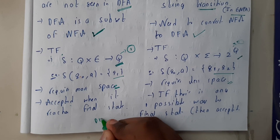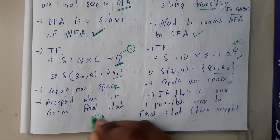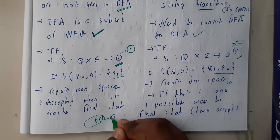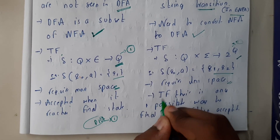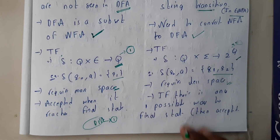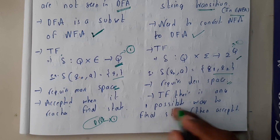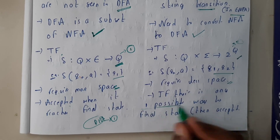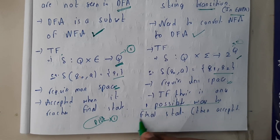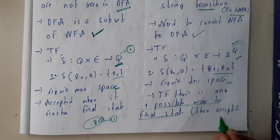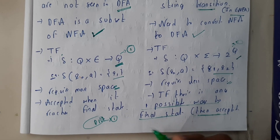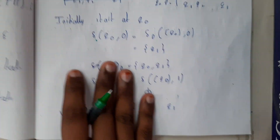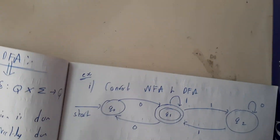Regarding acceptance: in DFA we will be having a single possible path or way to reach the output, whereas in NFA there are many possible ways — more than one way to reach the final state. Even if it reaches the final state by any one of those paths, it will be accepted.